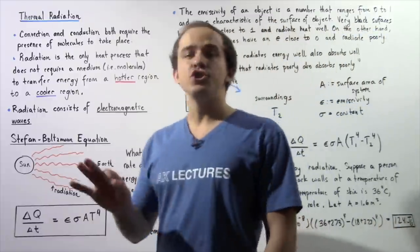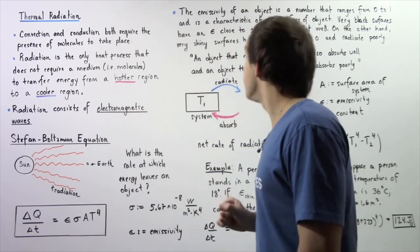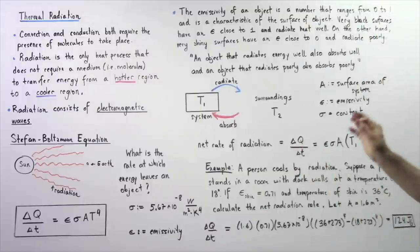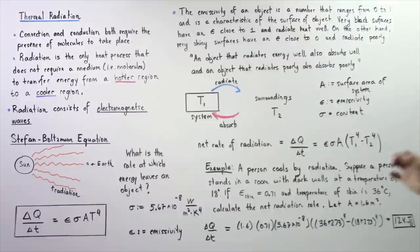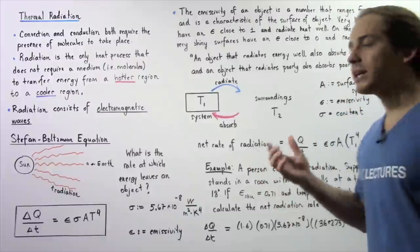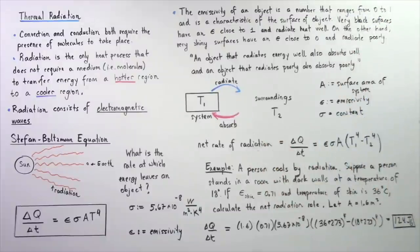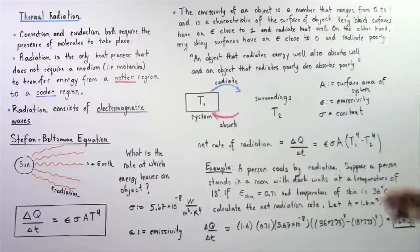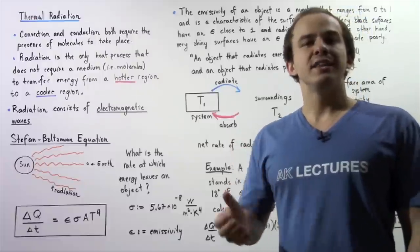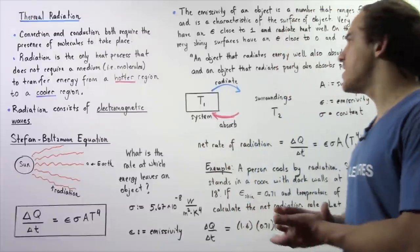Epsilon is known as the emissivity. The emissivity of an object is a dimensionless number ranging from zero to one and is characteristic of the object's surface. Very dark and black surfaces have an epsilon close to one and radiate heat very well. On the other hand, very shiny and white surfaces have an epsilon close to zero, meaning they radiate heat very poorly.